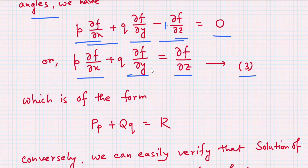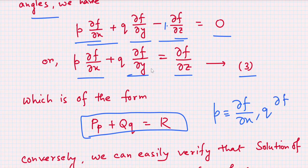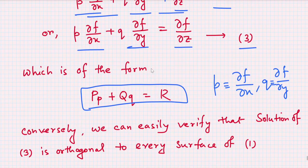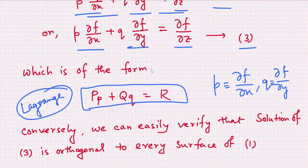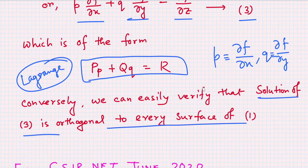This is equation (3), which is of the form Pp + Qq = R, where P = ∂f/∂x is the first-order partial derivative with respect to x, and Q = ∂f/∂y is the first-order partial derivative with respect to y. We can solve this equation using Lagrange's method of first-order PDE.